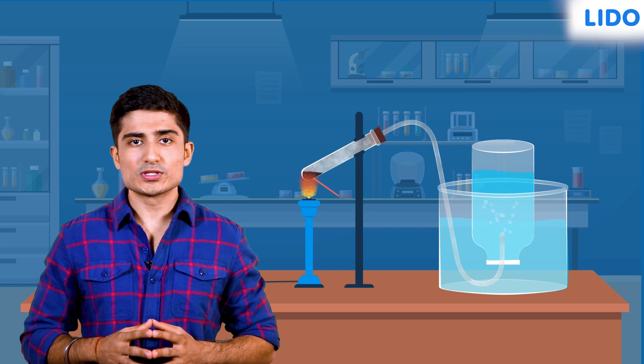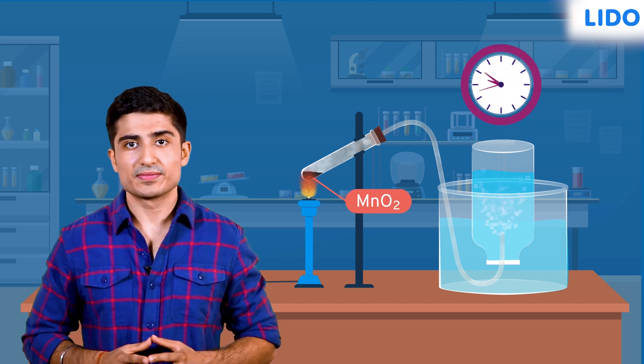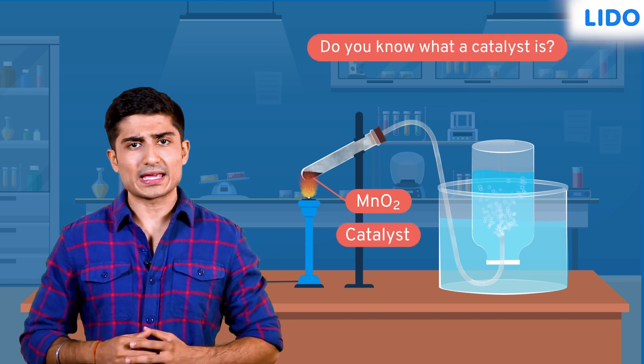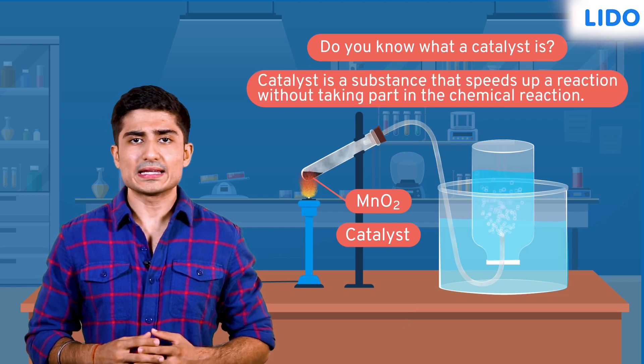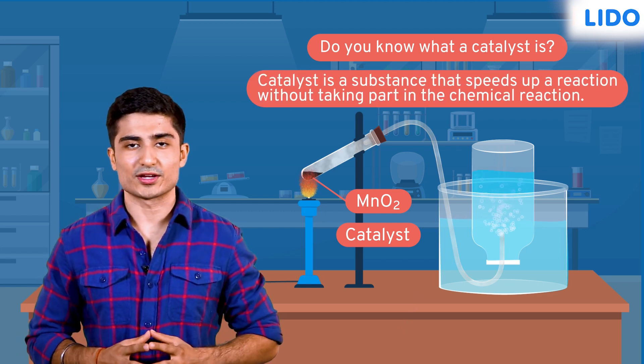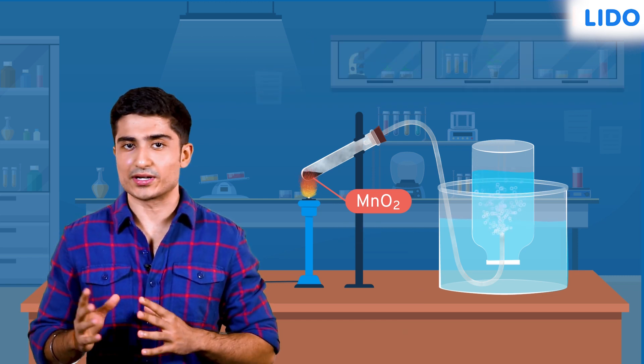We can also use manganese dioxide to make the reaction progress even faster. The manganese dioxide acts as a catalyst in this reaction. Do you know what a catalyst is? Well, a catalyst is a substance that speeds up a reaction without taking part in the chemical reaction. After the reaction, the same amount of the catalyst substance is recovered.